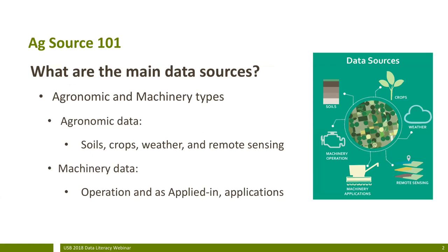Moving forward to what we call AgSource 101 — what are the main data sources? Our team divides this information into agronomic and machinery types. Agronomic is divided into soils, crops, weather, and remote sensing, and machinery specifically covers everything related to operation and application. When farmers decide they want to use information to take decisions, they will be facing a situation where on-farm data comes from different types of sources.